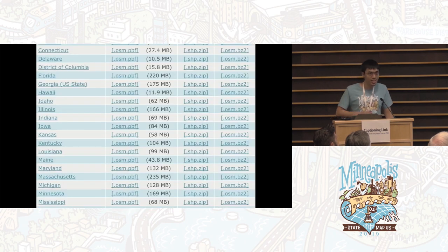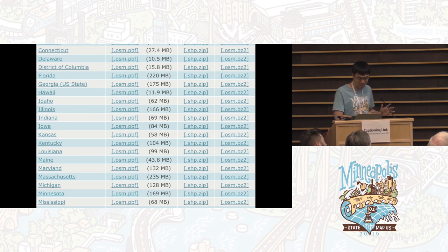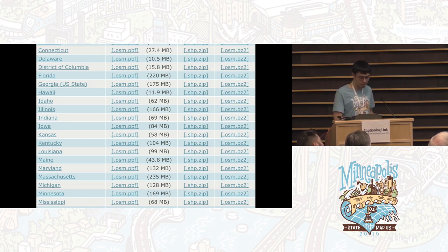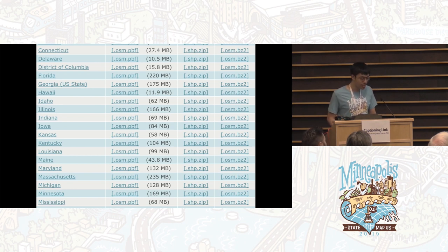In fact, there's so much of it that there are dedicated services to cutting the OSM planet down into smaller extracts so that people can load their area of interest into a GIS tool. But what if you don't need all the data in a given area — just the data that meets some criteria?